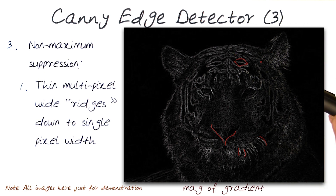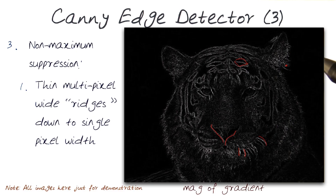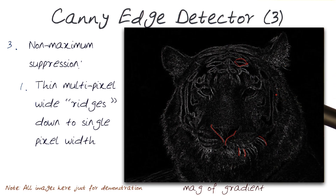Anywhere where I see regions that seem to have more than one pixel, we want to start combining them into single pixels and lines of single pixels. In essence, it comes down to taking the wide ridges — remember those ridges from the height map — and reducing them down to something that's one pixel width.